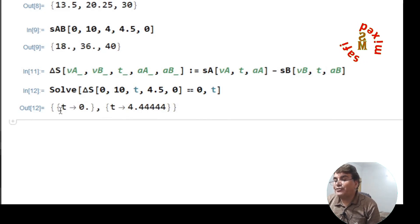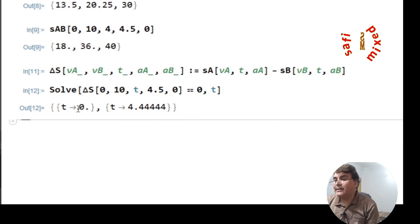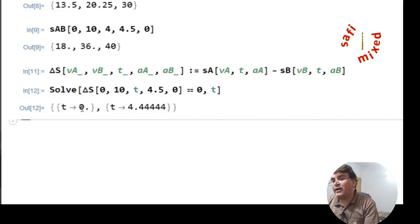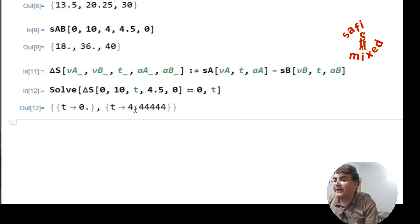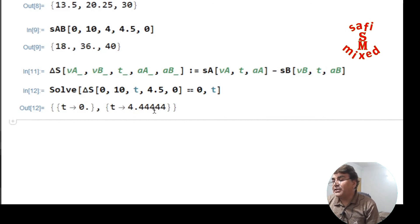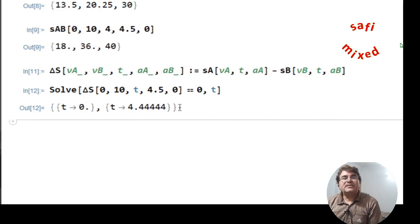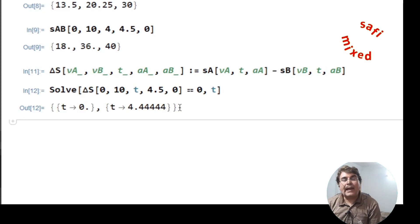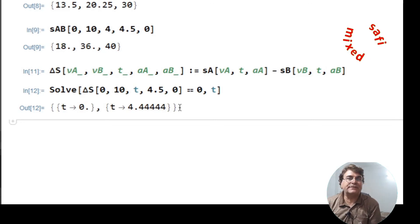At t=0, as given in the statement of the problem, car B crosses car A — so they are at the same position at the start. At t=4.44 seconds they are again at the same distance, meaning car A overtakes car B at t≈4.44 seconds. I hope this simple code for solving a physics problem based on equations of motion will help you generate complex codes for solving complex problems in your research. Good luck and thanks for watching.